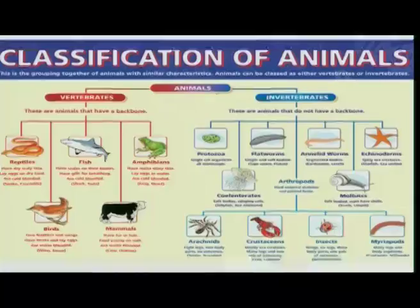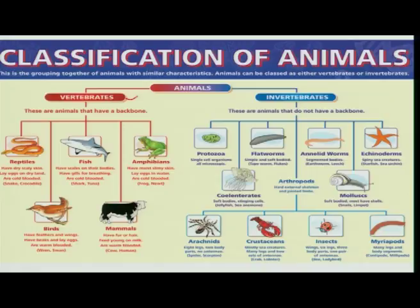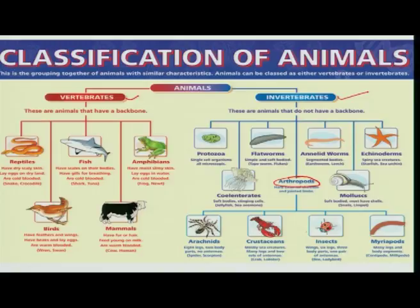What exactly is the position of insects in the animal kingdom? The animal kingdom can be broadly categorized as vertebrates and invertebrates. Insects come under the phylum Arthropoda and mainly belong to the invertebrate group. Insects share this phylum with other sister groups such as arachnids, crustaceans, and myriapods.